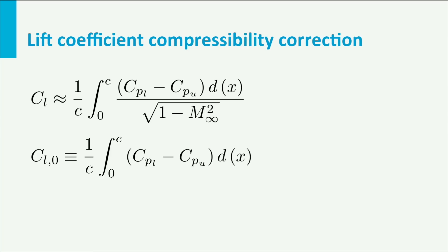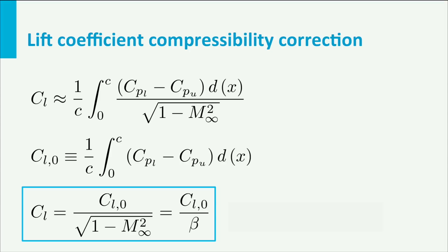Since it is a correction on the Cp, we can assert this into the equation for the lift coefficient. For a particular Mach number the correction is a constant and after some rearranging we find that the correction also applies to the lift coefficient. The square root of 1 minus m squared is also called beta. So Cl compressible is Cl incompressible divided by beta.